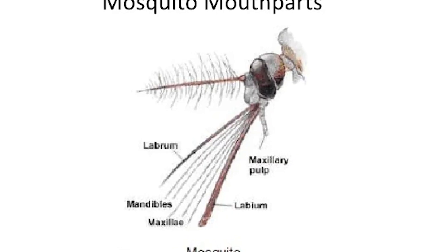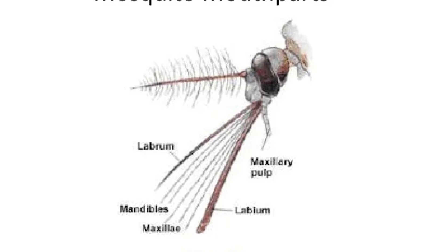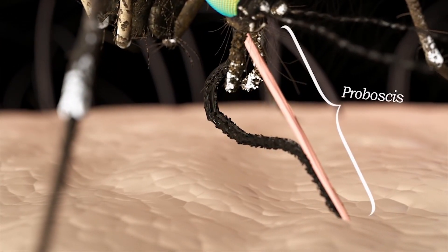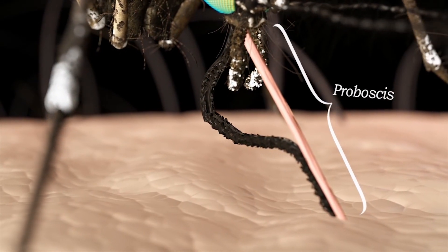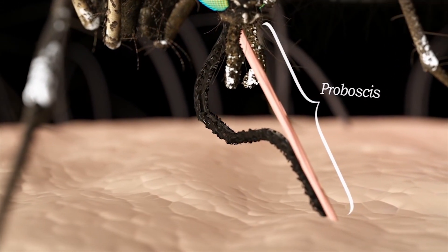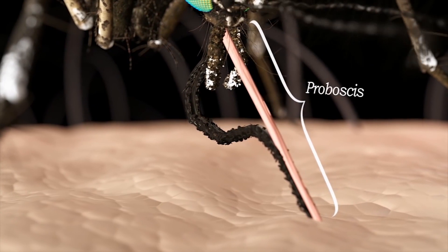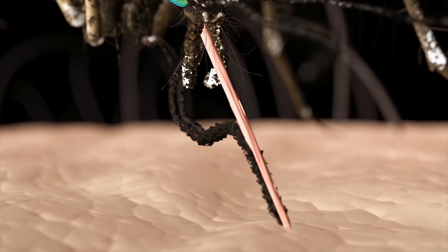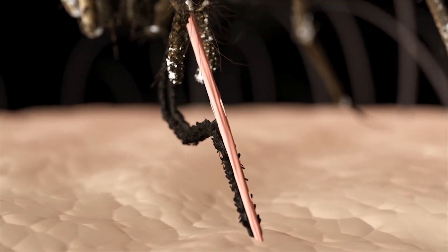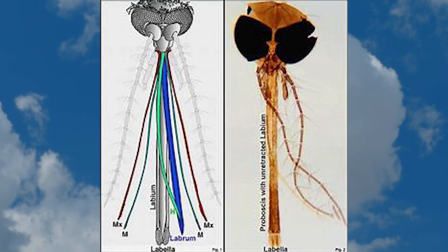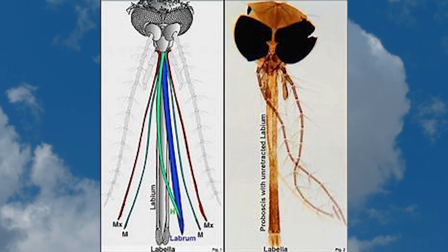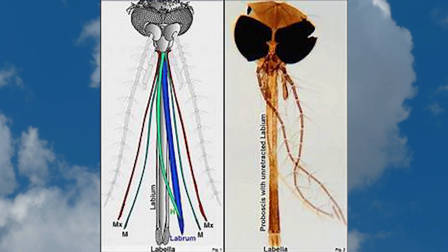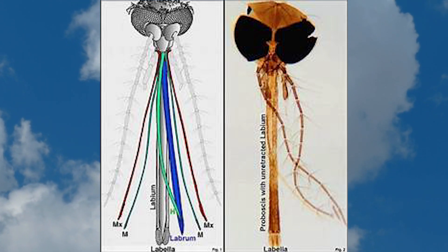The mosquito's body has several specialized structures which allow it to stealthily feed on its victims' blood. The proboscis is the main feeding apparatus, resembling a long, slender tube that extends from the front of its head. This tubular structure is composed of various components that work in harmony to achieve the mosquito's feeding objectives. Within the proboscis, there are six thin, needle-like structures called stylets, divided into pairs each with a distinct function during feeding.